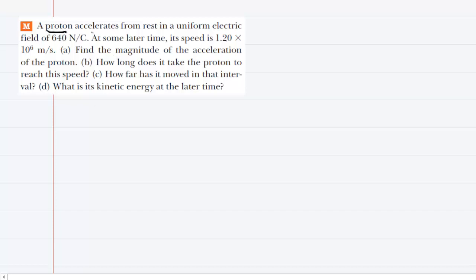We have a proton that is placed in a uniform electric field, and in part A they want us to figure out the acceleration of the proton. We must understand that when a charge is placed in a uniform electric field, then an electric force arises whose magnitude is equal to the charge magnitude multiplied by the electric field.